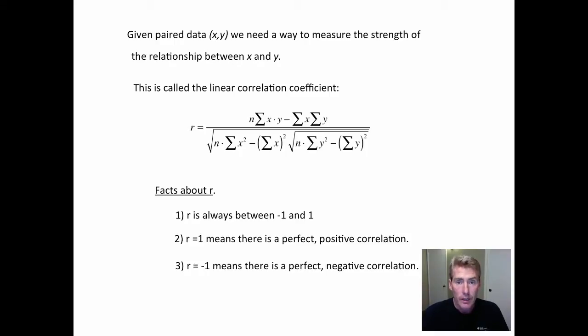But here's important facts about R that we will be using. One is the R was constructed so that it's always between negative one and positive one. It can equal one, but that means that there is a perfect positive correlation. That means basically you've got a line, Y equals 3X plus one. So the slope is three and every dot is on that line. It's perfect. There's no dots that are off of the line even by a little bit.